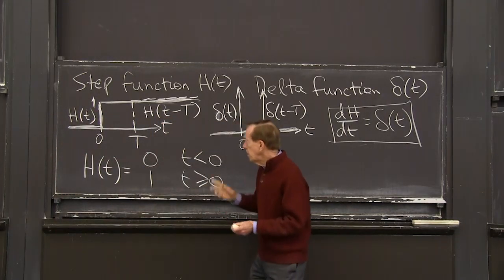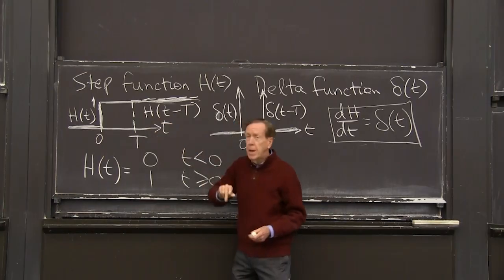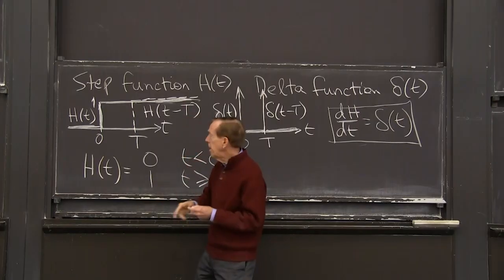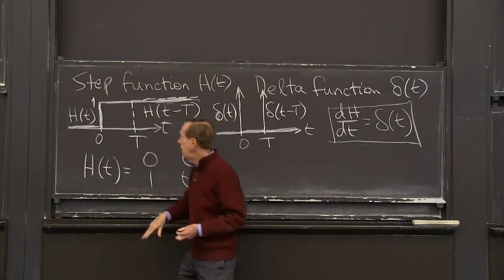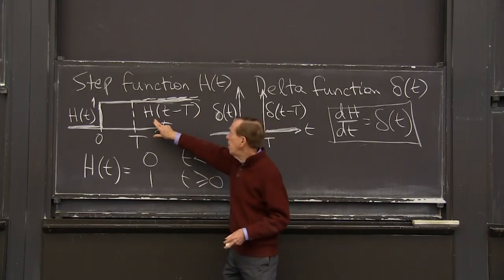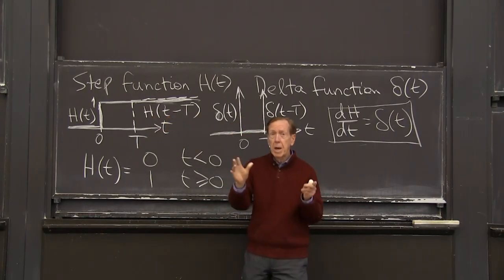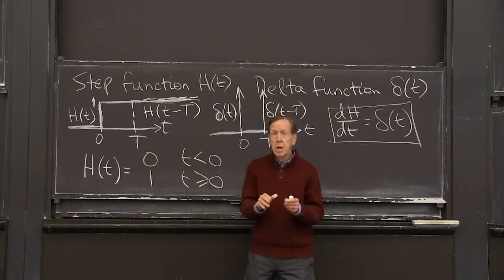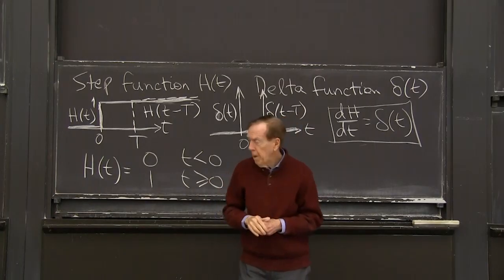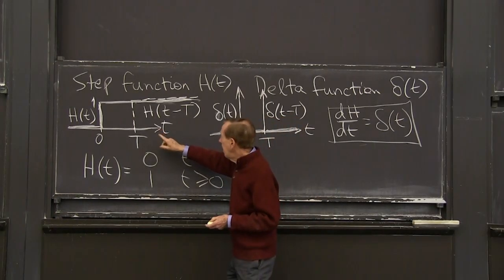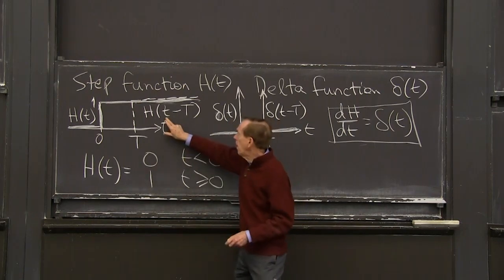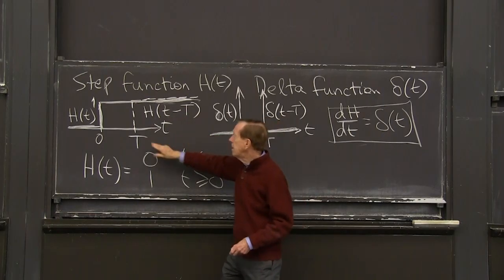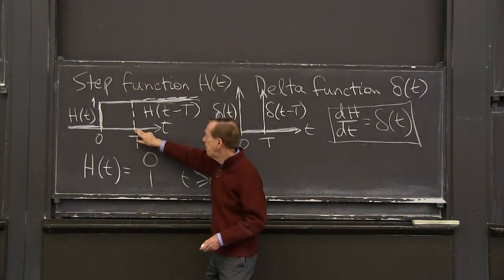All right. And notice, I've also graphed the shifted step function. What happens to any function, including this one, if I change from t, which jumps at 0 to h of t minus T. If I put in t minus some fixed number T as the variable, then the jump happens. So the jump will happen when this is 0. Step functions jump when that's 0.